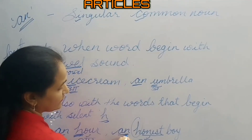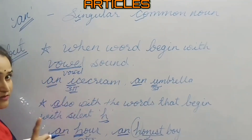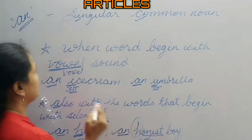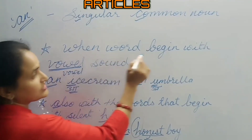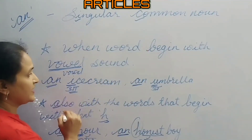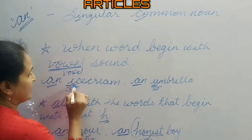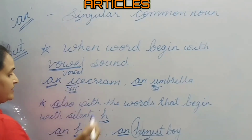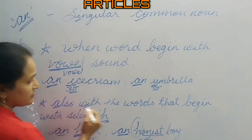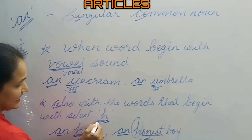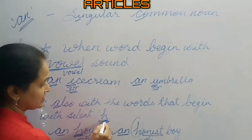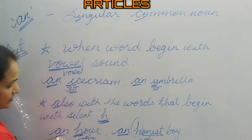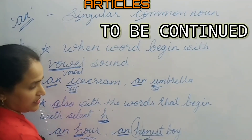So to summarize: article 'an' is used with a singular common noun when the word begins with a vowel sound. It is also used with words where the 'h' is silent and the word produces a vowel sound at the start. For example: an hour, an honest boy.